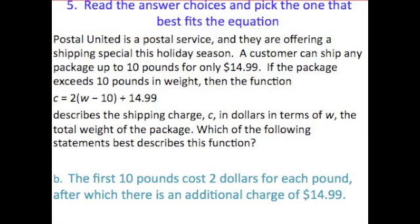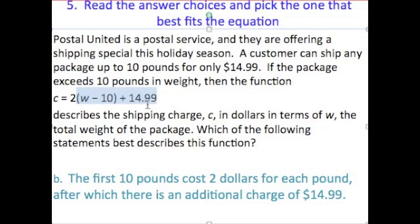Let's look at choice B: the first 10 pounds cost $2 per pound each, after which there is an additional charge of $14.99. That's not true, because if the first 10 pounds cost $2 each, how much did you pay for the first 10 pounds? The answer is $20 — 2 times 10 — plus $14.99. That doesn't fit this function at all. The first 10 pounds only cost us $14.99 total, so that can't be right.